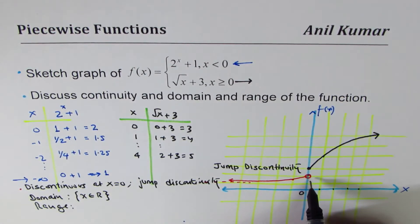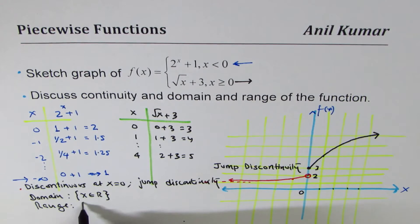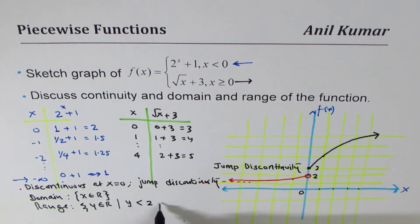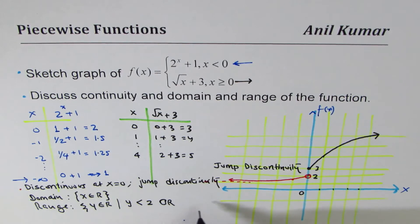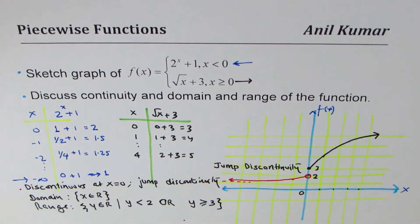And the range. Range is clearly we have this value here at 2 and that is 3. So it is, we can say, y belongs to real numbers such that y is less than 2, right? It is never 2. Correct. Less than 2. Or, or, okay, or y is greater than or equal to 3. Is it okay? Either way.